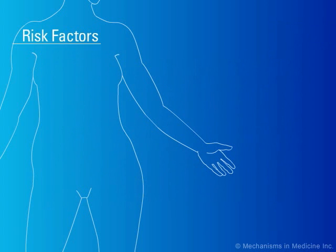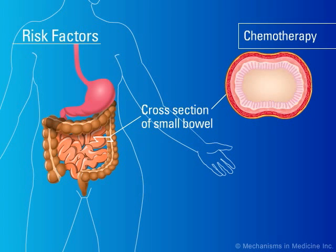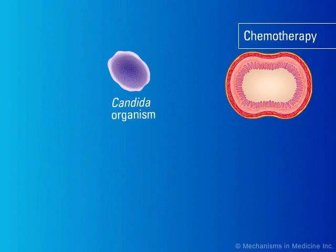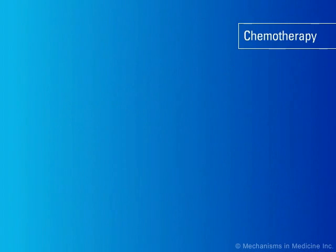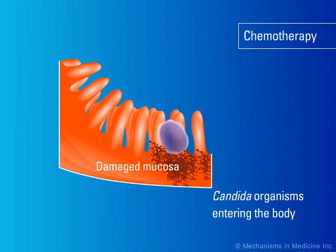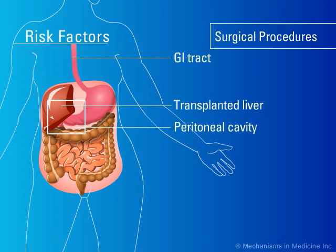The fourth factor predisposing patients to invasive candidiasis is the use of chemotherapy. Chemotherapy can destroy the mucosa of the gastrointestinal tract. In addition, chemotherapy may also produce neutropenia. The lack of neutrophil cellular defense and the denuded gastrointestinal mucosa provide the opportunity for Candida organisms to invade the body from the gastrointestinal tract. As noted here, Candida organisms present on the damaged gastrointestinal mucosa that cannot be checked by neutrophil cellular defenses easily translocate into the bloodstream and cause invasive fungal infections.